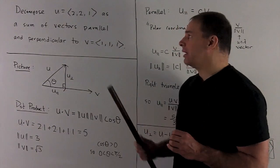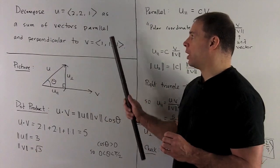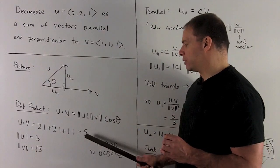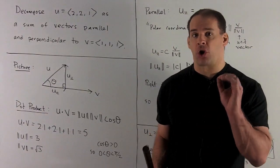In this case, if I take the dot of u and v, it's going to be 2 times 1 plus 2 times 1 plus 1 times 1, that gives me a 5. So that means the cosine is positive, so we've drawn the picture correctly.